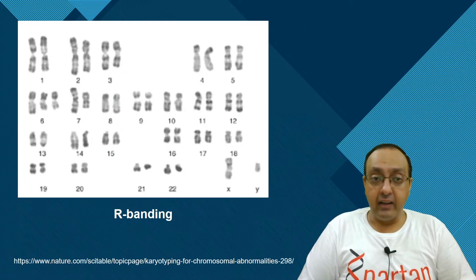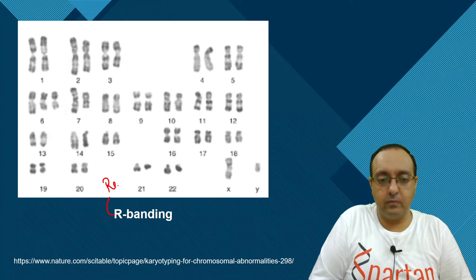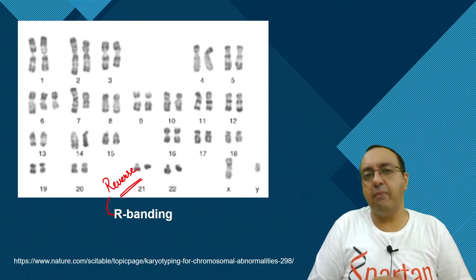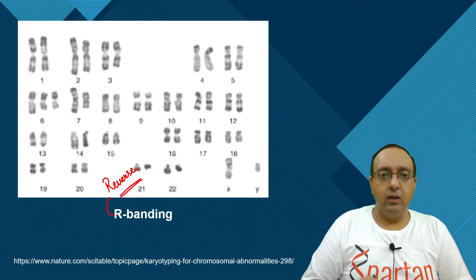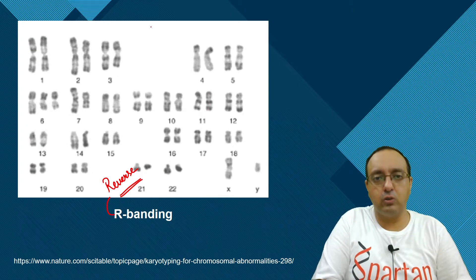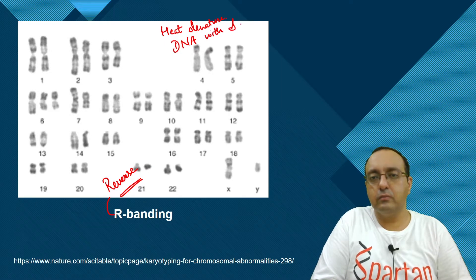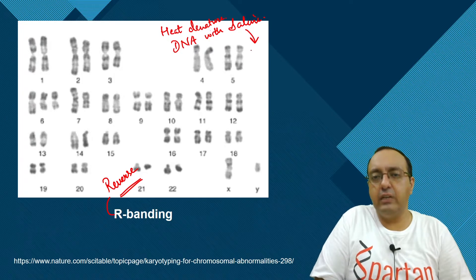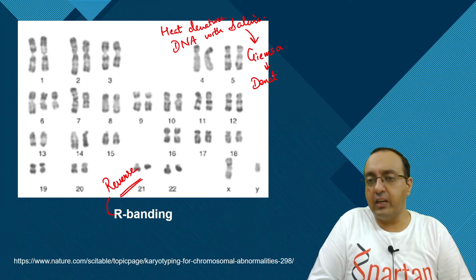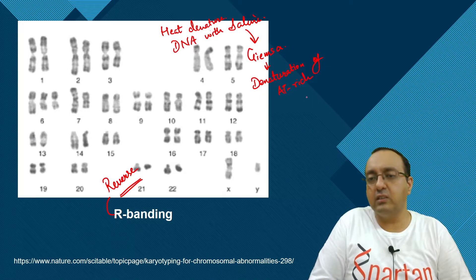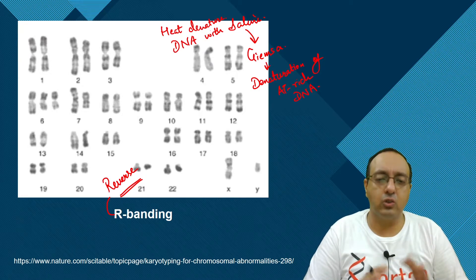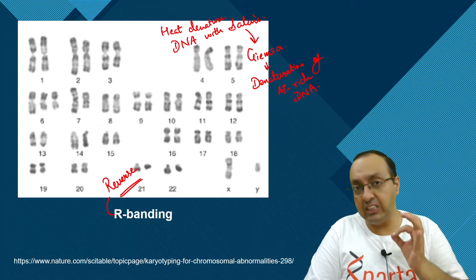Another technique is called R-banding. The 'R' stands for reverse, as it stains bands opposite to those of G-banding. The procedure is a little peculiar: we heat-denature the DNA with saline using some buffering, then apply the regular Giemsa stain. This leads to denaturation of AT-rich DNA so it cannot be bound by the dye, giving a banding pattern opposite to G-banding. R-banding therefore stains GC-rich DNA.